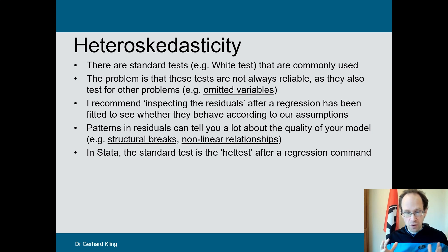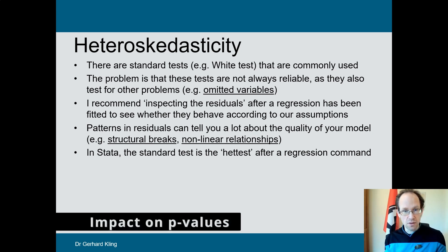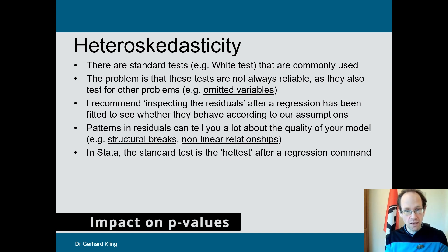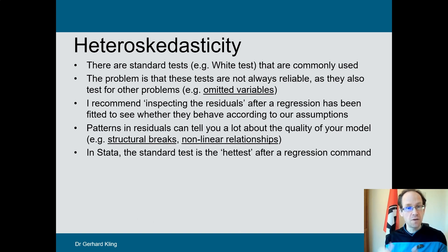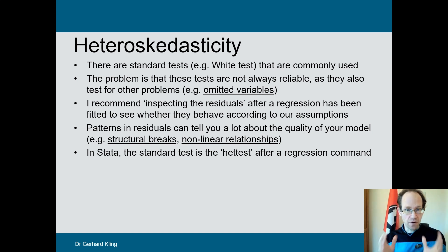Let's get started. The main assumption we make when we run a regression model is that the error term in our model has a constant variance throughout all the observations. This assumption is quite important when it comes to calculating the p-values and all the associated statistics needed to derive the p-value. If a p-value is below 0.05 we can reject the null that the coefficient is equal to zero with 95 percent level of confidence. This assessment depends crucially on the assumption that the error variance is constant — it's homoskedastic.